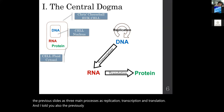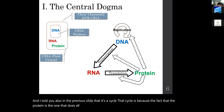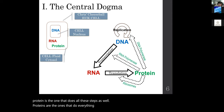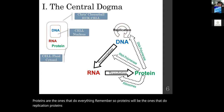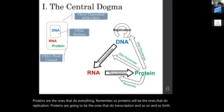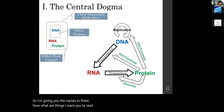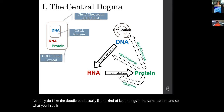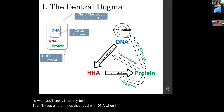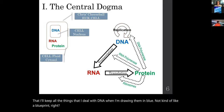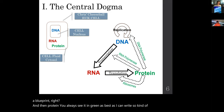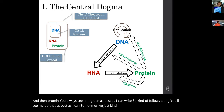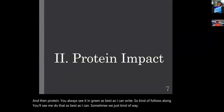The central dogma is a cycle because proteins are the ones that carry out all these steps. Proteins do replication, proteins do transcription, and so on. One thing I want you to notice is that I like to color-code things: everything related to DNA I draw in blue — like a blueprint — and proteins I draw in green. Follow those color patterns along as best you can.